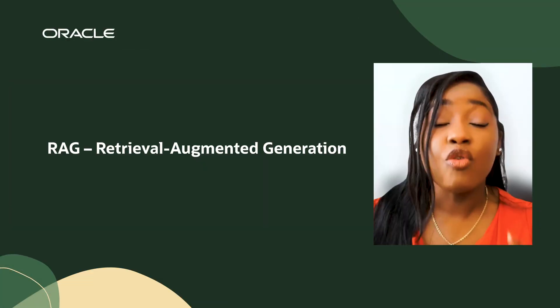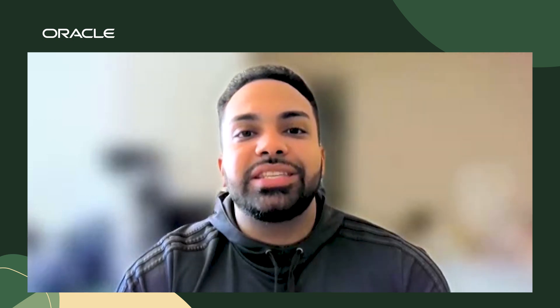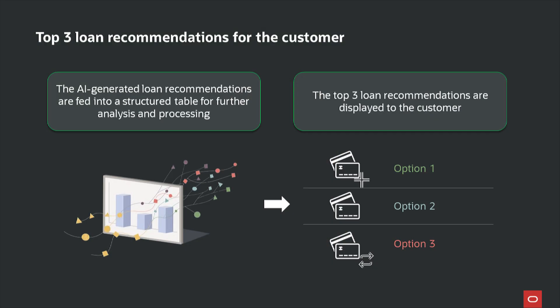Quick code term check: RAG is Retrieval Augmented Generation — it's just a fancy way of saying that we're adding our company-specific data to the LLM in a secure way and using AI to do the thinking for us, not on random data from the internet but on the app's actual data. It helps the AI give more accurate results by pulling in real data rather than just guessing. With RAG, the AI works directly with real data from the database so we can make accurate, personalized recommendations — telling us which loans are out of reach and which loans customers qualify for.